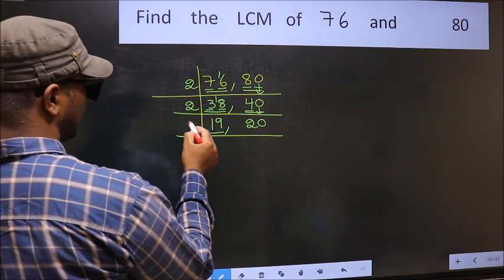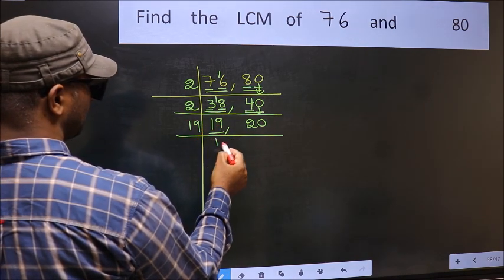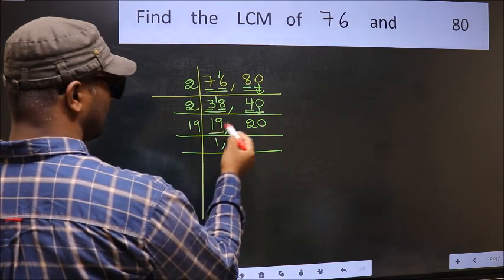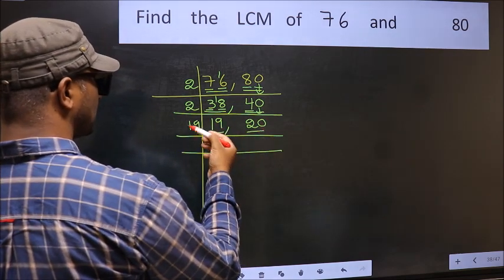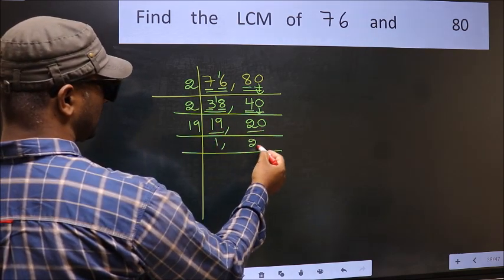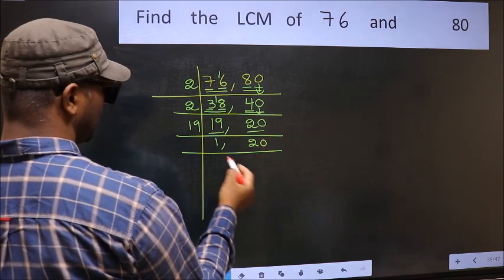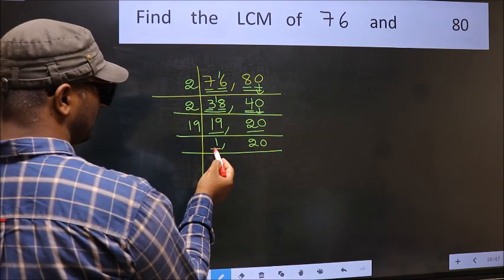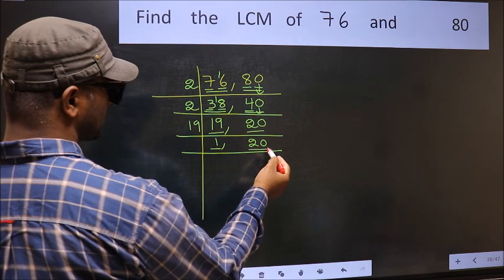Now here we have 19. 19 is a prime number, so 19 once is 19. The other number 20 is not divisible by 19, so you write it down as it is. Now we got 1 here, so focus on the next number 20.